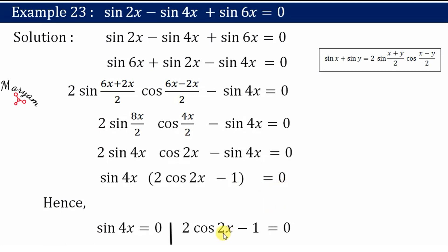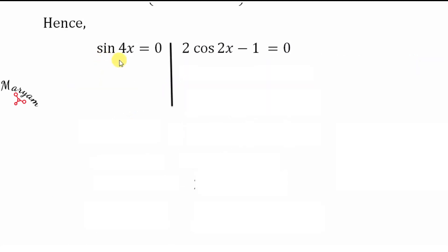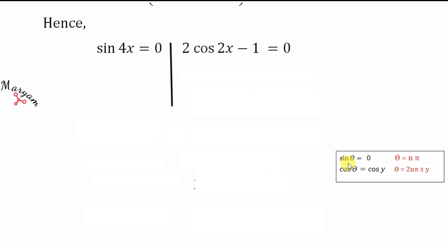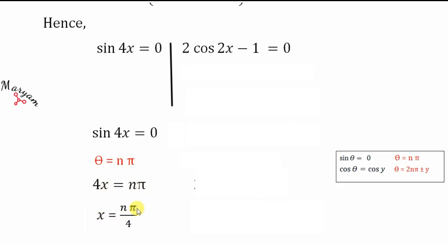We need to find the general solution of both terms. sin 4x = 0 is already in the standard form sin θ = 0, for which θ = nπ. Here θ = 4x, so 4x = nπ, giving x = nπ/4. This is the general solution for sin 4x = 0.